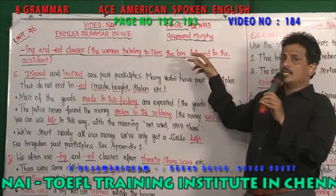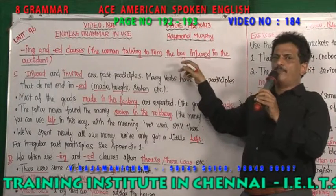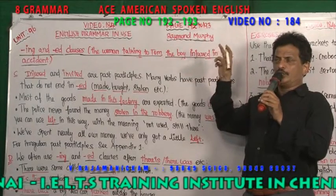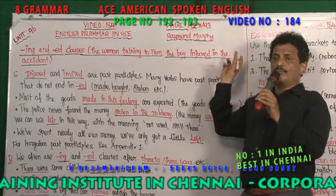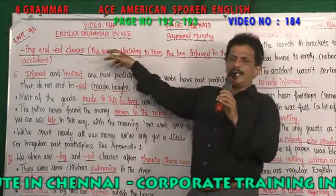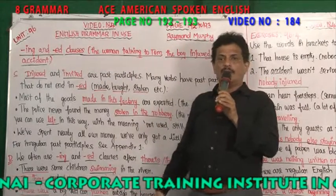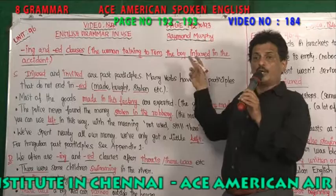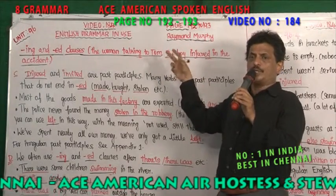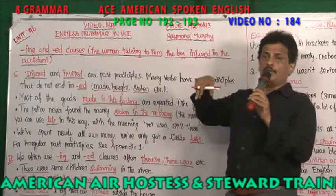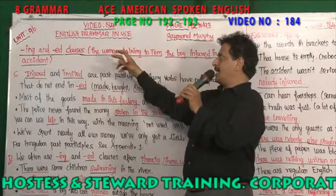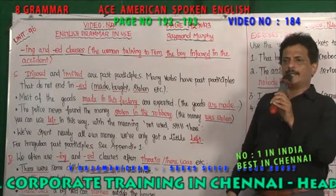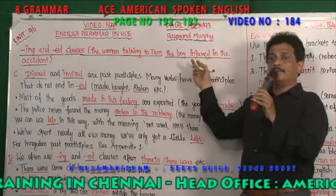Now see ED verbs. The boy injured in the accident. The girl married to a foreigner. You want to mention about the girl by stating that she was married to a foreigner. At this particular time the woman is talking to Tom; at this particular time the particular person was injured. You want to mention the particular person who was injured. You are describing and relating with the noun: 'the women talking to Tom,' 'the boy injured in the accident,' 'the bus coming opposite to you,' and 'the girl married to a foreigner.'